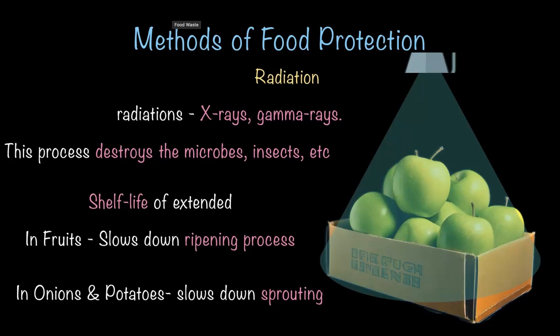Radiation also helps extend the shelf life of certain foods. For example, in fruits it slows down the ripening process, which means they stay fresh for longer. For onions and potatoes, it slows down the sprouting, which keeps them usable for a longer period of time. This method is a perfect example of how technology is being used to make our food safer and last longer.